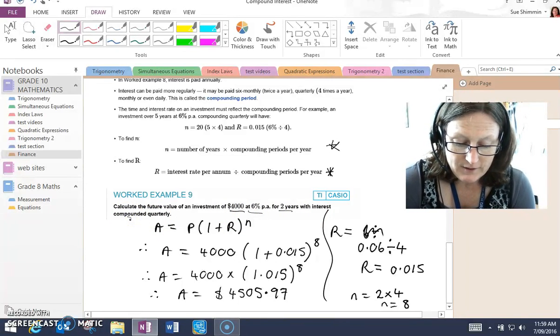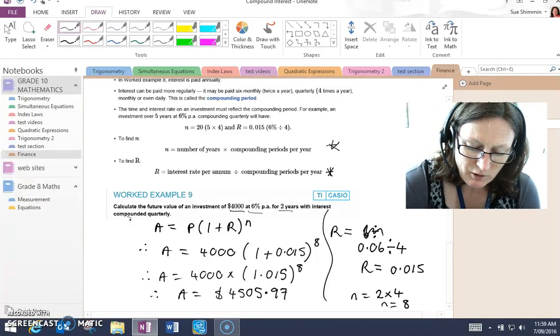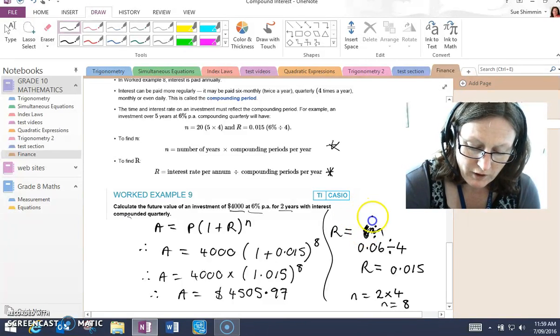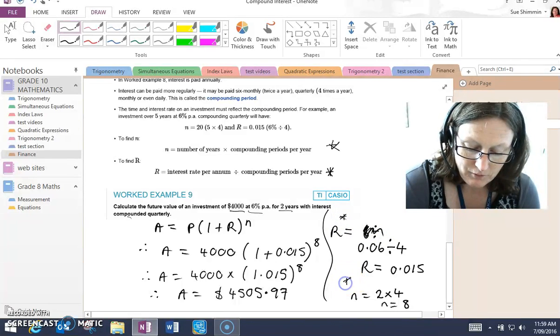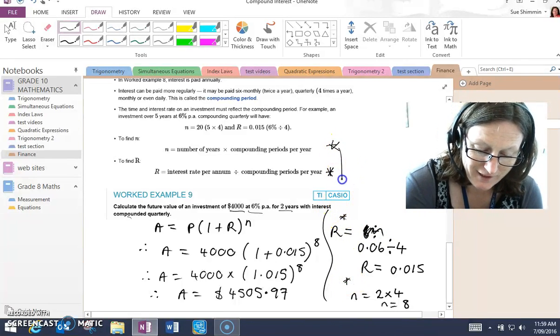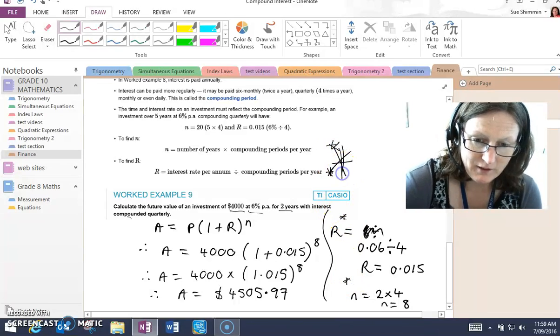In this case, the difference is we've got a little bit more work to do. We need to work out the rate and the number of years. This explains how we did that.